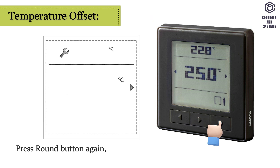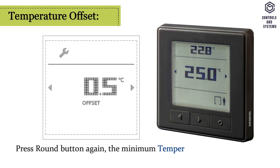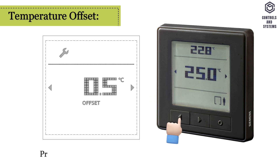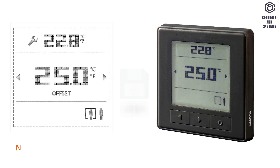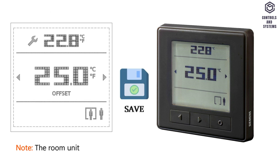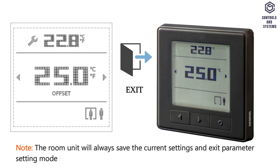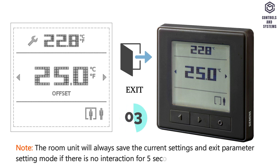Temperature offset: press the round button again, the minimum temperature offset value appears; press left button or right button to adjust the offset value. Note: the room unit will always save the current settings and exit parameter setting mode if there is no interaction for 5 seconds.